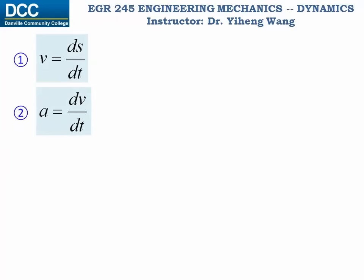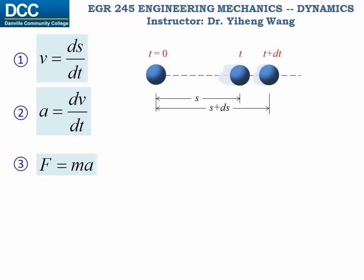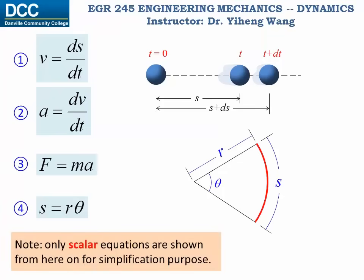The two kinematic equations that relate displacement, velocity, and acceleration to time. Newton's second law. And lastly, the equation that relates the length of an arc to its central angle. Note that again, only scalar equations are shown here and from here on to simplify the demonstration. We will learn the proper vector formulations later.